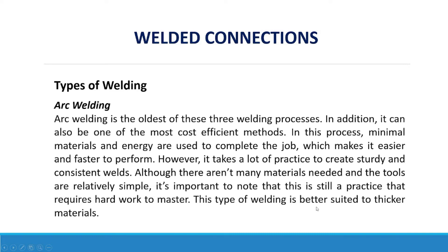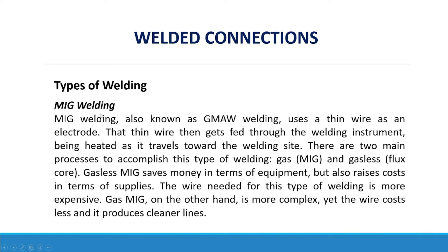This type of welding is better suited to thicker materials. MIG welding, also known as GMAW welding, uses a thin wire as an electrode. That thin wire gets fed through the welding instrument, being heated as it travels towards the welding site. There are two main processes: gas or MIG, and gasless or flux core. Gasless MIG saves money on equipment but raises costs in supplies, as the wire needed is more expensive.